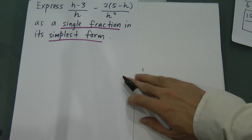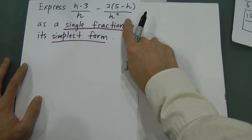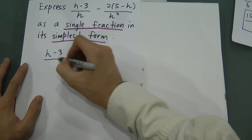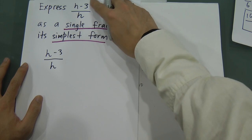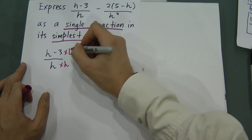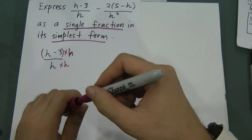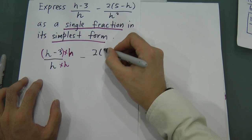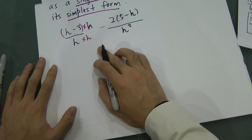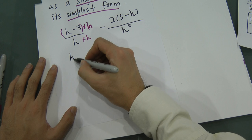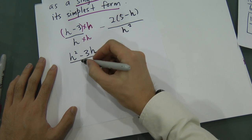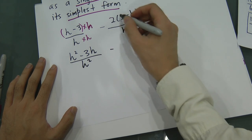Same thing for Example 1 — to make both denominators equal to h-squared, I multiply h on top and bottom of the first fraction. So I multiply h here, giving h times h equals h-squared on the bottom, and negative 3 times h gives negative 3h on top. The second fraction (5h divided by h-squared) stays as it is.